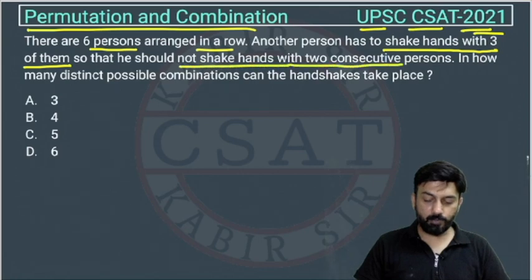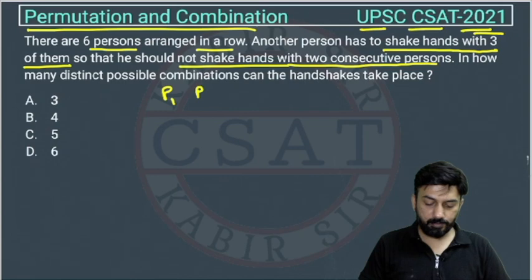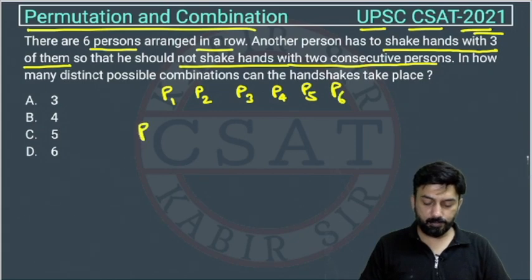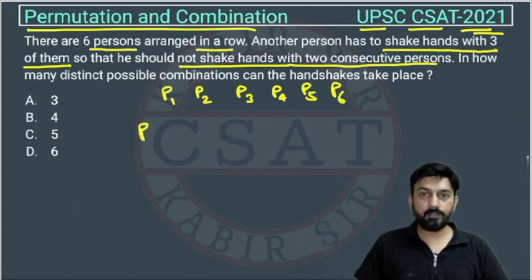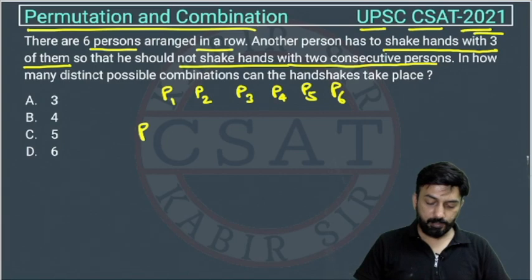Suppose there are these six persons: P1, P2, P3, P4, P5, and P6. There is another person who is shaking hands with three persons, not with two consecutive persons—they should not be consecutive.